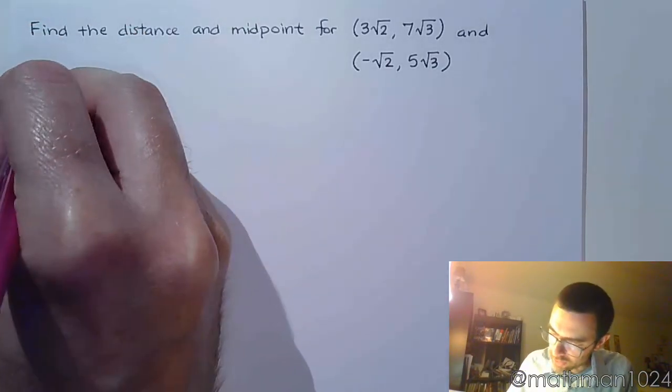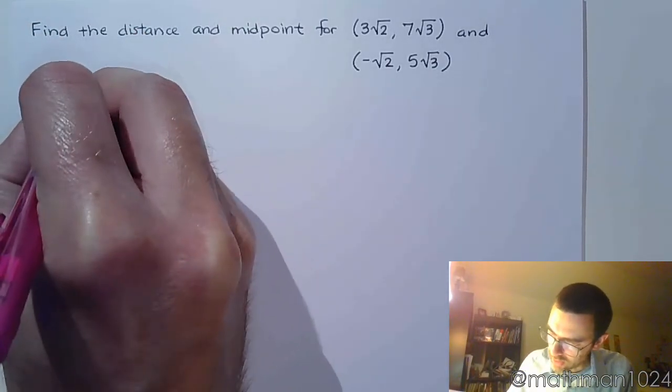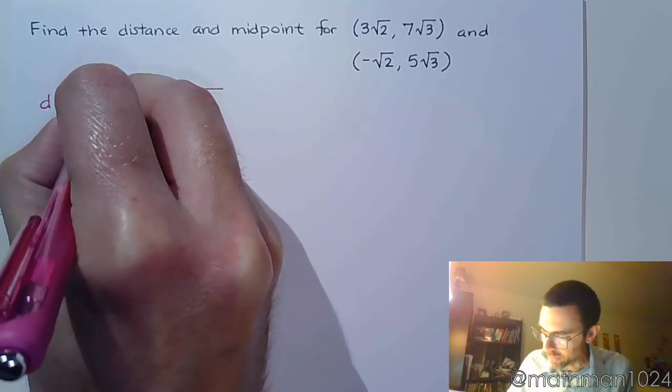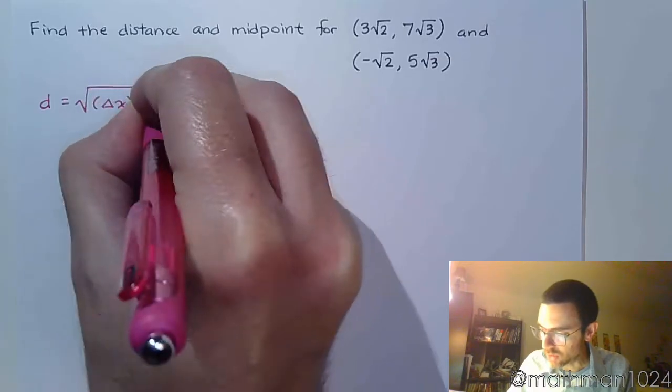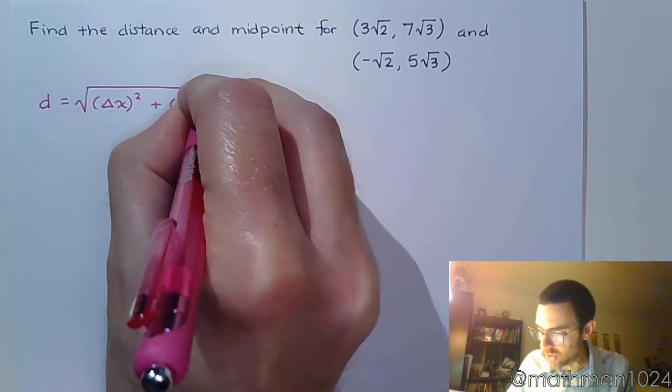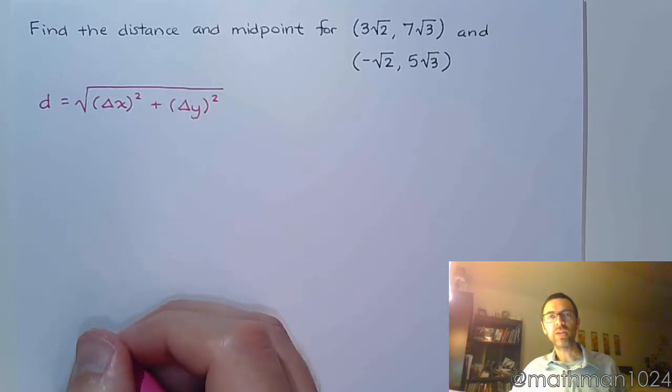First, let's talk about the distance. Again, the formula has not changed. First, it's going to be the change in x squared plus the change in y squared, now all inside of a square root.